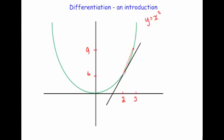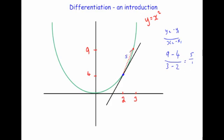Let's work out the gradient of some of these chords. I want to work out the gradient of the tangent at the coordinate (2, 4). I've chosen a point on the curve at 3 across, 9 up — because 3 squared is 9. The gradient is y2 minus y1 over x2 minus x1: 9 subtract 4, divided by 3 subtract 2. That gives 5 over 1, so the gradient of this chord is 5, which is quite large.